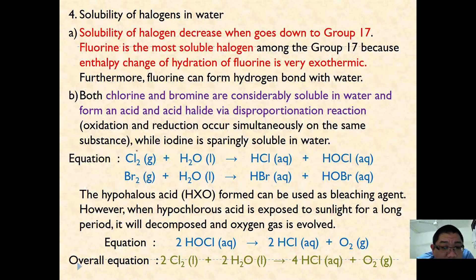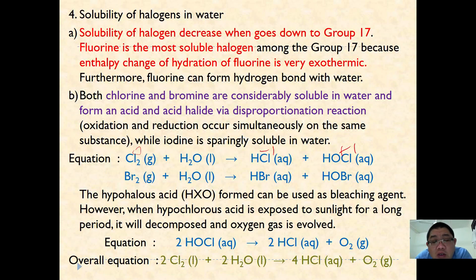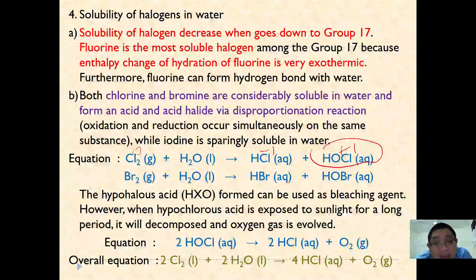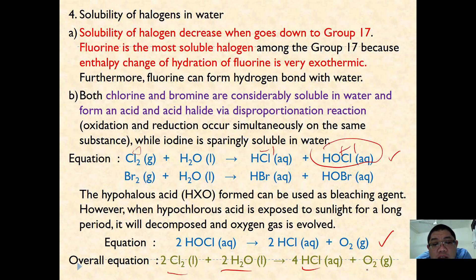Since oxidation and reduction occur simultaneously, this is a disproportionation reaction. This reaction cannot proceed under ultraviolet conditions because HOCl is used as a bleaching agent but decomposes when exposed to sunlight — particularly UV light — decomposing into HCl and O₂. Combining these two equations gives the overall reaction: 2Cl₂ + 2H₂O → 4HCl + O₂.